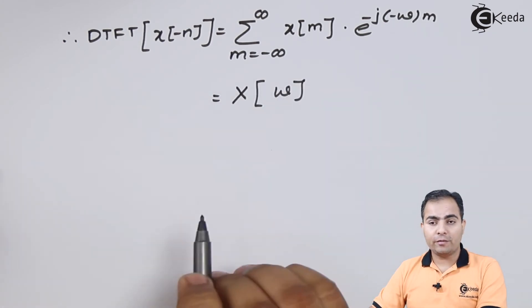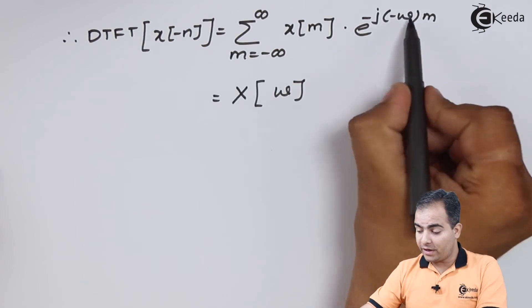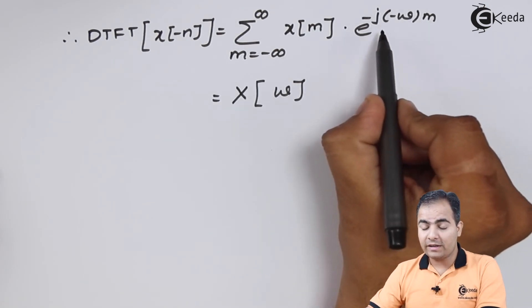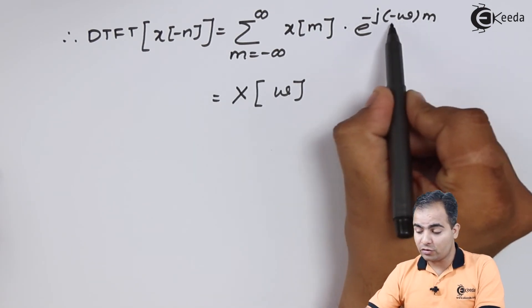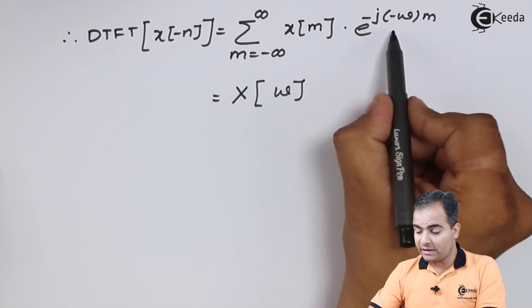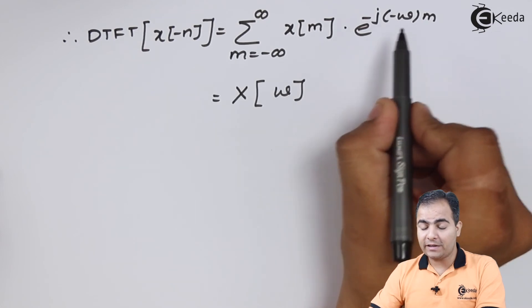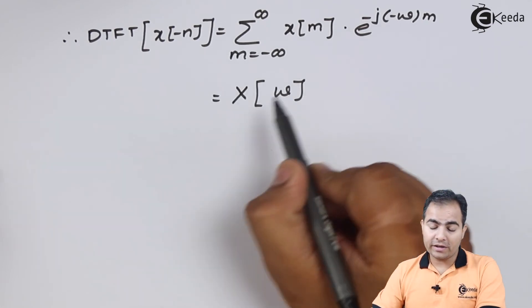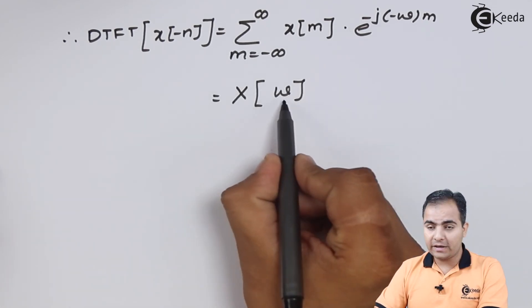So we directly write here X of omega. But remember we have considered my omega is nothing but, or you can say, minus omega is omega. So we are going to resubstitute this value. So my omega is considered, or my minus omega is replaced by omega, so we have to again resubstitute that value. So omega is now replaced by minus omega.